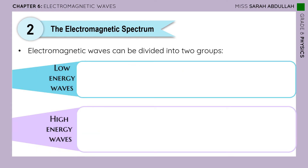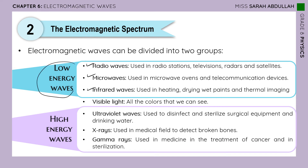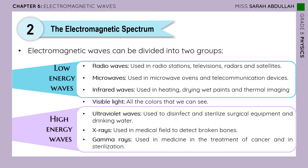Radio waves, microwaves, and infrared are low energy waves, while ultraviolet, x-rays, and gamma rays are high energy waves. You can read through the uses of these electromagnetic waves on this slide.